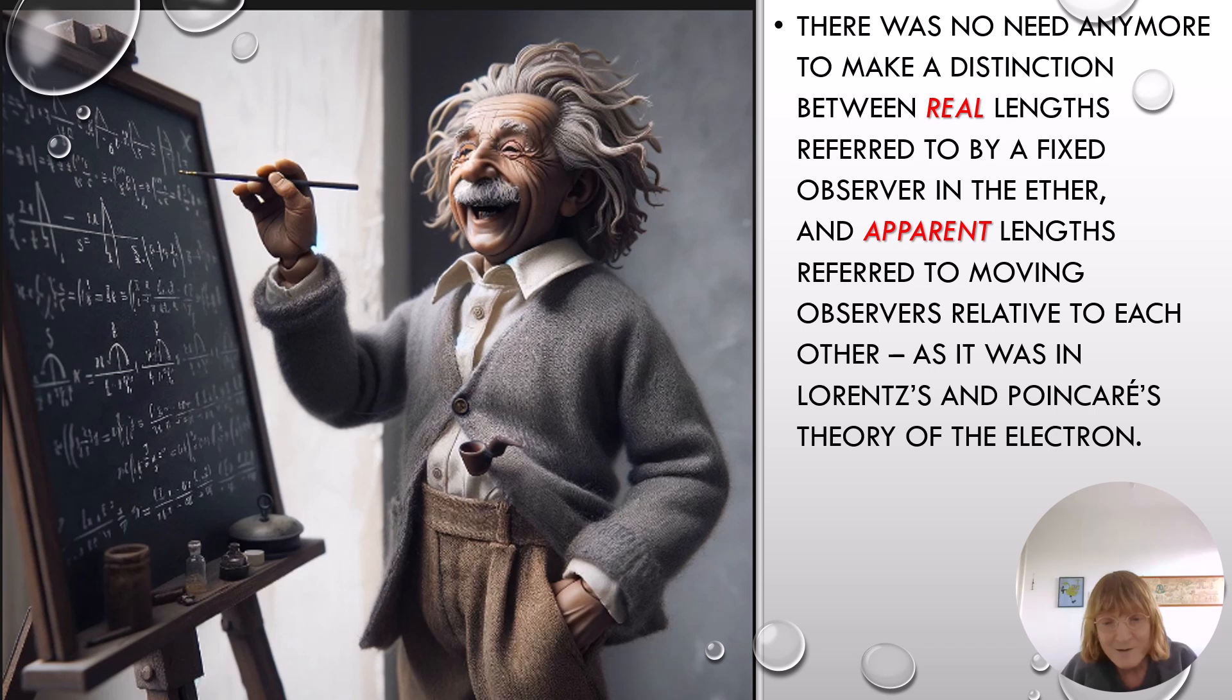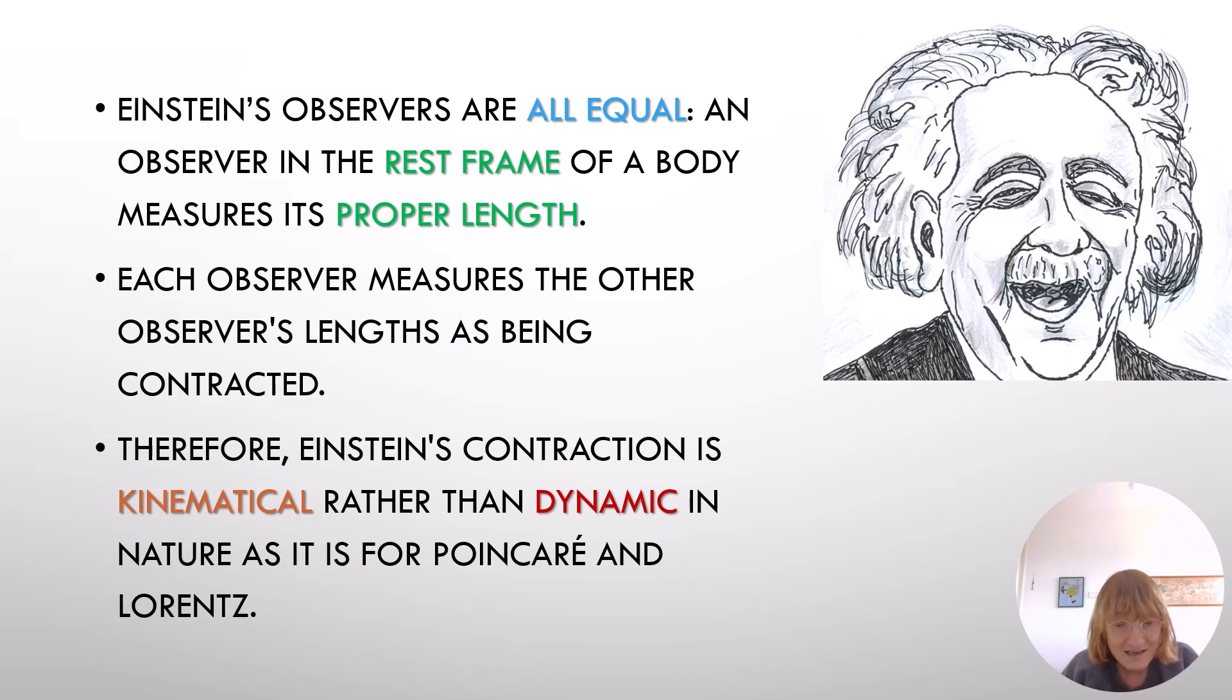There was no need anymore to make a distinction between real lengths referred to by a fixed observer in the ether and apparent lengths referred to by moving observers relative to each other, as it was in Lorentz's and Poincaré's theory. In Einstein's theory, all observers are equal. An observer in the rest frame of the body measures its proper length. Each observer measures the other observer's length as being contracted. Therefore, Einstein's contraction is kinematical rather than dynamical in nature, as it is for Poincaré and Lorentz.